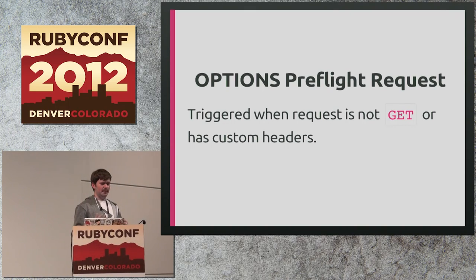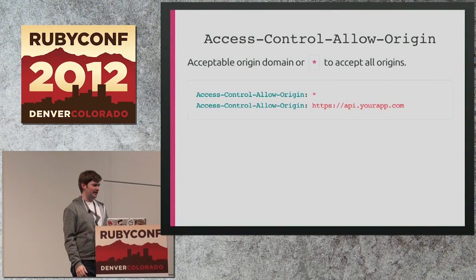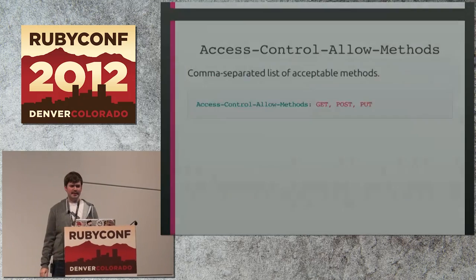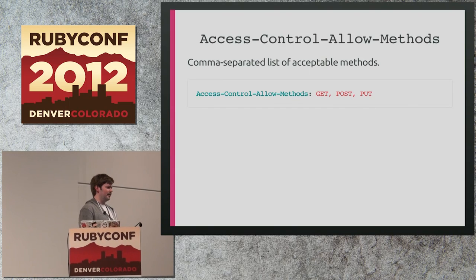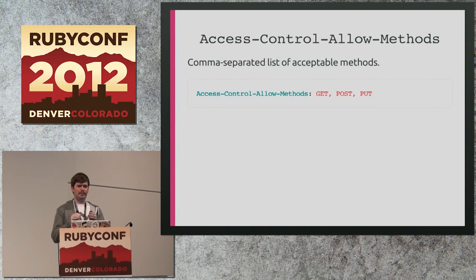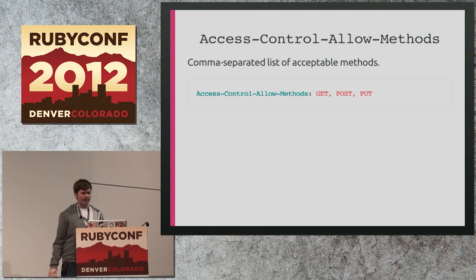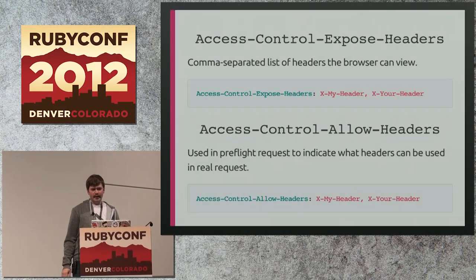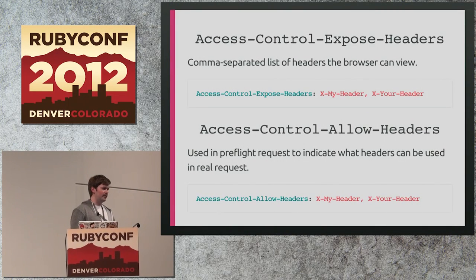The server responds with various headers. One is the Access-Control-Allow-Origin, which I already talked about. Another is Access-Control-Allow-Methods, which can be comma-separated — so if I have the same endpoint that can respond to GET, POST, PUT, and DELETE, I would add all of those to the Access-Control-Allow-Methods in that OPTIONS preflight response.